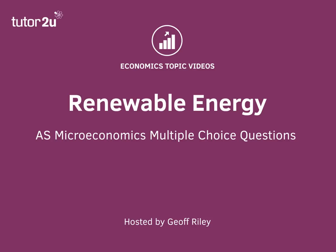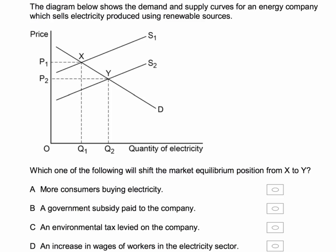Let's take a look at an AS Micro Multiple Choice question on the market for renewable energy. The diagram below shows the demand and supply curves for an energy company which sells electricity produced using renewable sources. Which one of the following would shift the market equilibrium from X to Y?